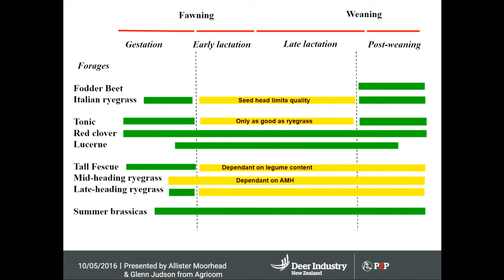Looking at the different species available to us today, it's a strong list with strengths suited to different stock classes, particularly when we focus on fawning and weaning — you can see classical advantages of certain species. Fodder beet and Italian ryegrasses have positives and limitations. Plantain again has positives and weaknesses where it may not be any better than anything else. The advanced party data clearly showed that — the biggest takeaway was the uniformity of performance throughout the 12 months. It was not necessarily spectacular all the way through, but it was very uniform, which helps planning. Red clover is very interesting from this industry's perspective.